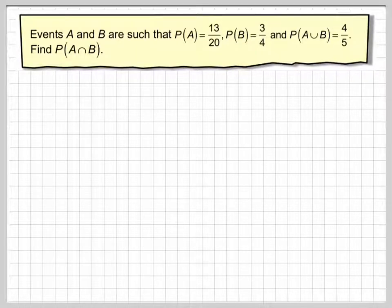So now we're going to do an example on the probability of combination of events. Events A and B are such that the probability of A is 13 out of 20, probability of B is 3 out of 4, and the probability of A union B is 4 out of 5. Find the probability of A intersection B.